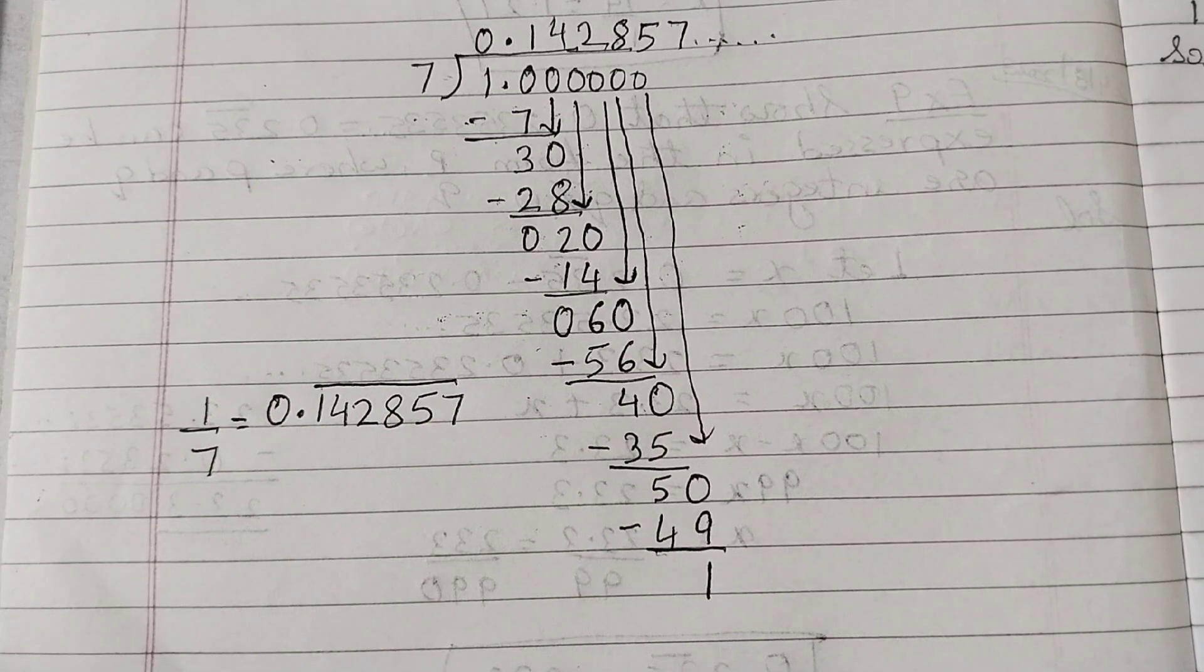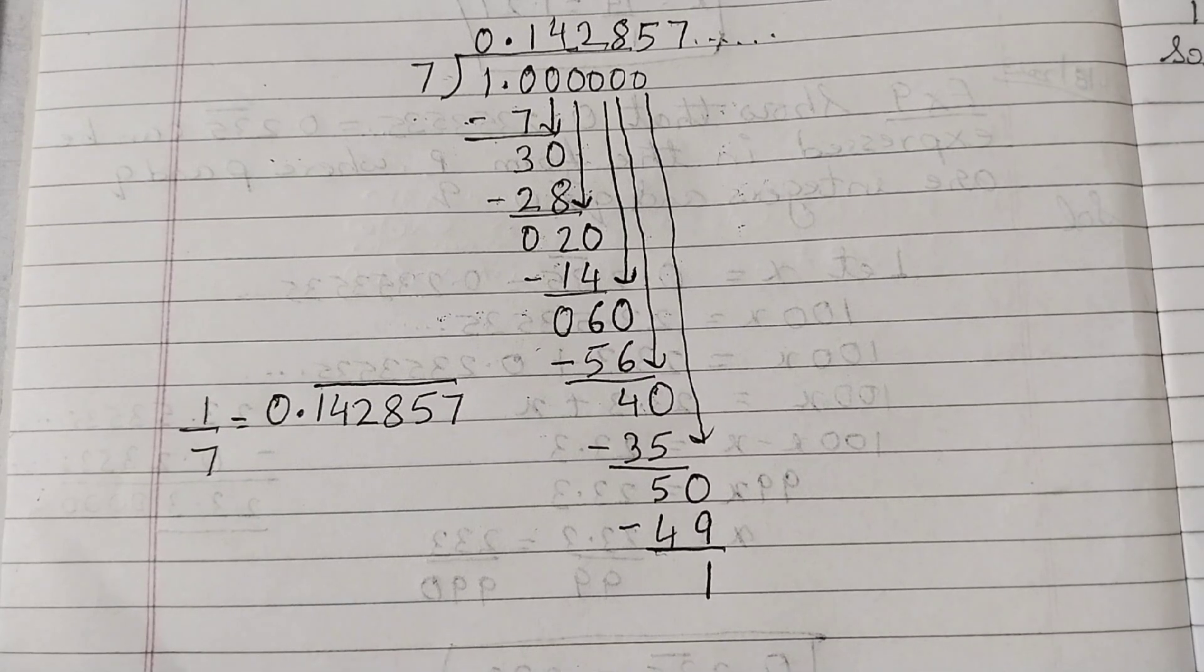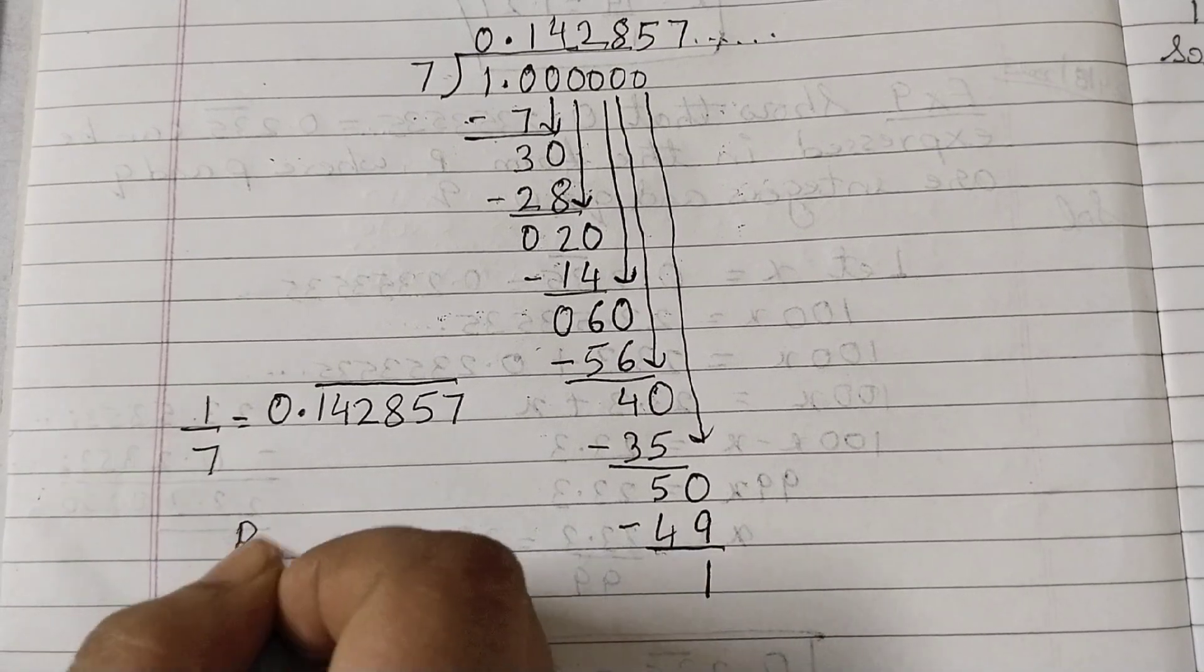This is a non-terminating, repeating decimal expansion. And if we have this type of expansion, we say this is a rational number.